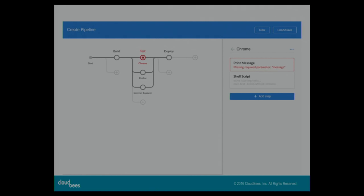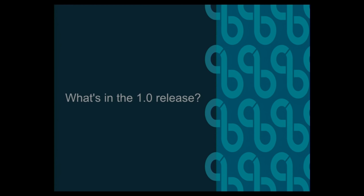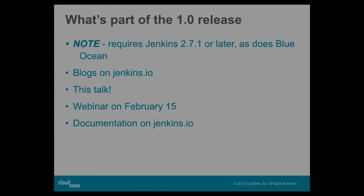We're looking forward to you trying it and giving feedback. The 1.0 release came out on Wednesday of last week and is in the Update Center. We will be very careful not to make any breaking backwards compatibility changes — if we do, that's a bug and we'll undo it. An important note: declarative requires Jenkins 2.71 or later — the first LTS line of Jenkins 2. Blue Ocean has the same requirement. If you're running Jenkins 1.x, it's a good time to upgrade — Jenkins 2 is beyond mature and the usability improvements are worth it.